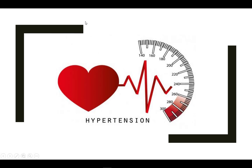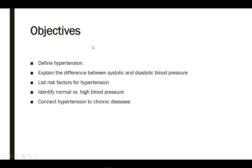Hypertension is a condition of chronic high blood pressure which can increase the risk for many health problems. In this video, we will discuss what hypertension is, list potential risk factors, and discuss the difference between systolic and diastolic blood pressure, the numbers associated with high blood pressure, and the connection with chronic disease.